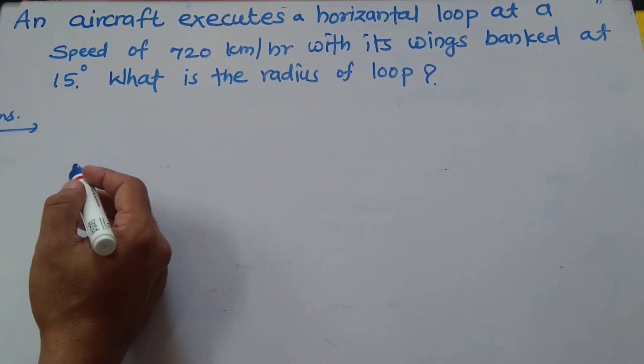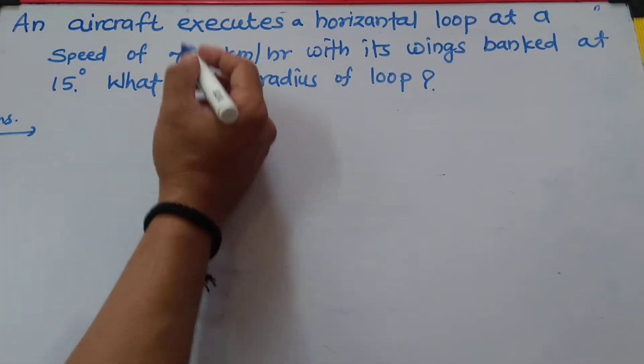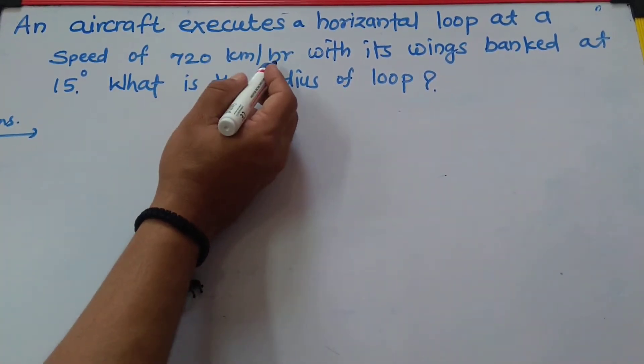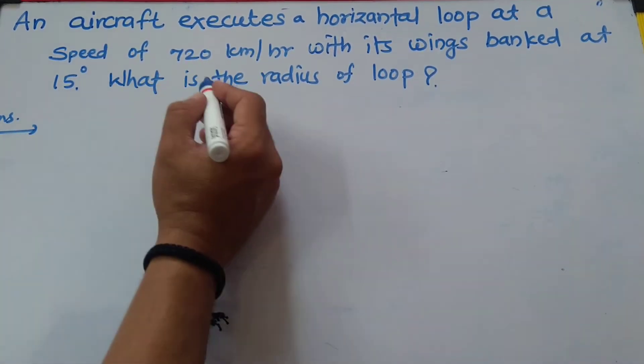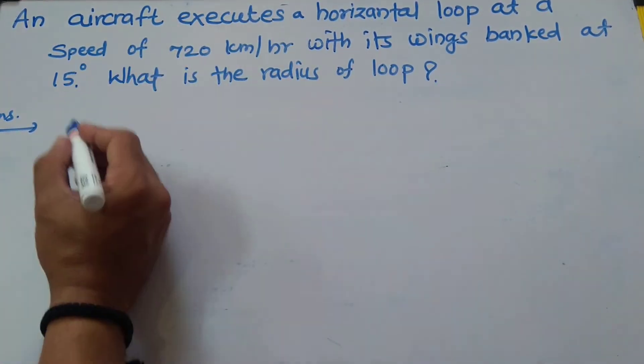An aircraft executes a horizontal loop at a speed of 720 km per hour with its wings banked at 15 degrees. What is the radius of the loop?